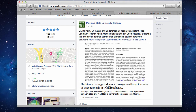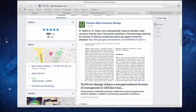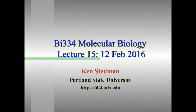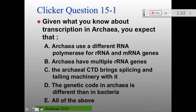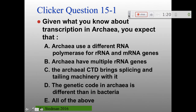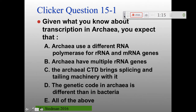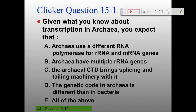Today we're going to continue talking about translation, but first we have everybody's favorite part of lecture — clicker questions. Given what you know about transcription in archaea, you would expect that: archaea use a different RNA polymerase for RNA and mRNA genes; archaea have multiple RNA genes; the archaeal CTD brings splicing and tailing machinery with it; the genetic code in archaea is different than in bacteria; or all of the above.